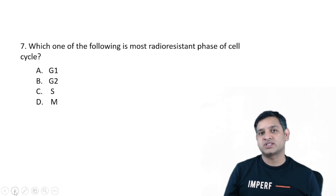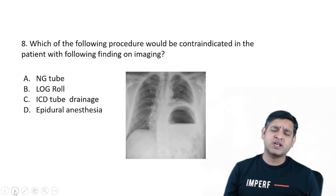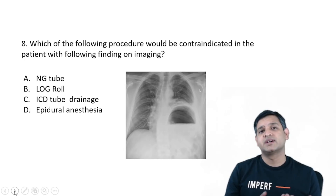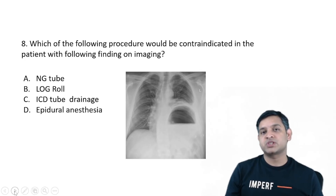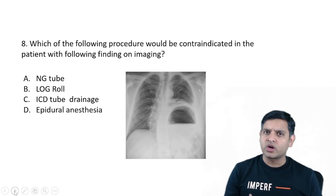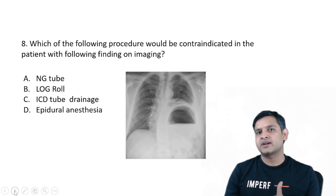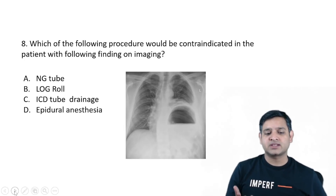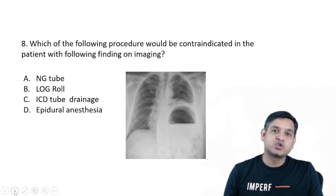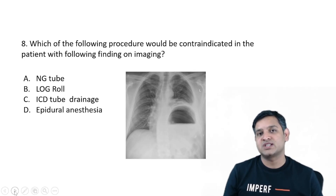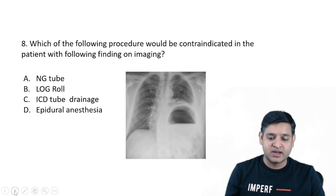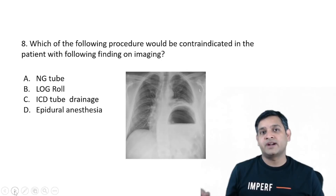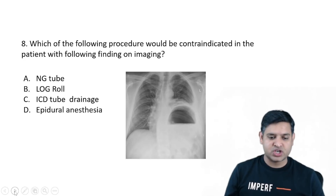If the examiner had asked for the most radio-sensitive phase, among those choices the answer would be M phase. Since they asked for radio-resistant, it should be S phase. Another question had an image where the fundic bubble was placed much higher — it was a trauma case with the stomach bubble placed high into the thorax. The question asked which procedure would be contraindicated. I feel it could be a diaphragmatic injury with the stomach herniated into the thorax, so intercostal drainage (ICD tube) should not be done — placing an ICD tube could injure the stomach.